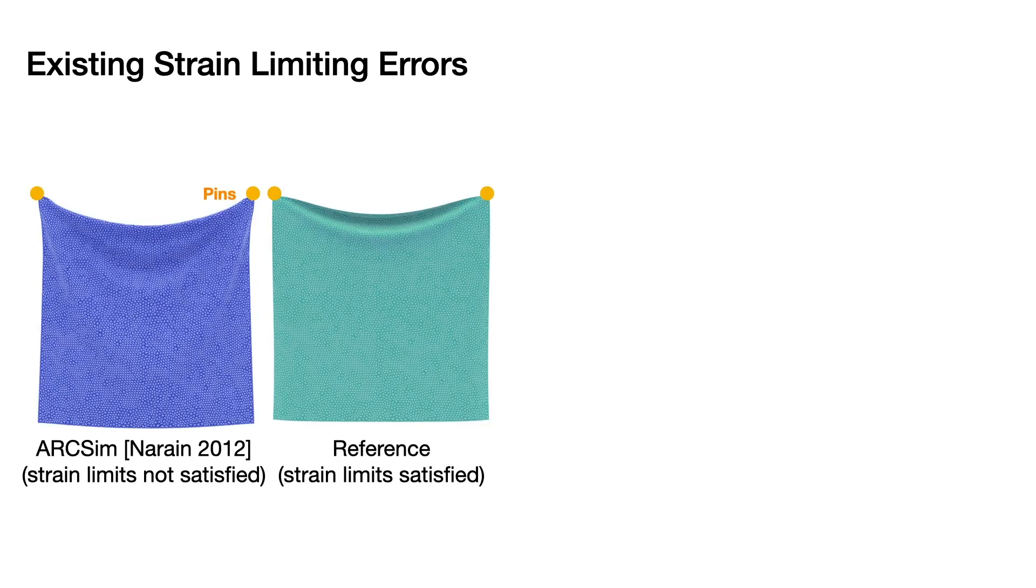But strain limiting is a challenging nonlinear inequality, and existing methods are unable to strictly enforce strain limits. This gives uncontrollable material behavior as we vary simulations.